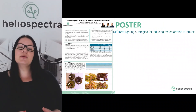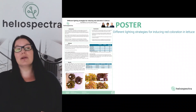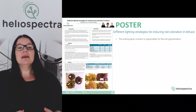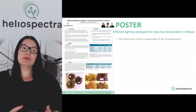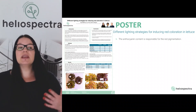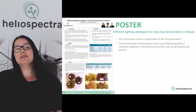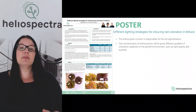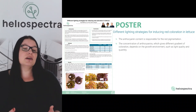The poster I would like to talk about is called 'Different Lighting Strategies for Inducing Red Coloration in Lettuce.' The anthocyanin content is responsible for the red pigmentation in red-green lettuce — that is what gives it this beautiful red color. The concentration of anthocyanin gives different gradients of coloration depending on the growth environment of the crop, such as the light quality and quantity.